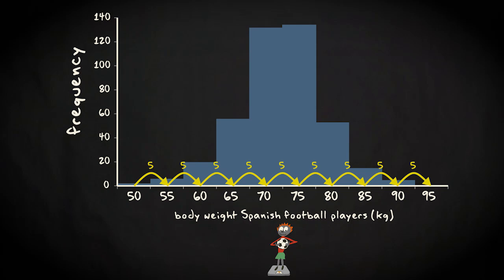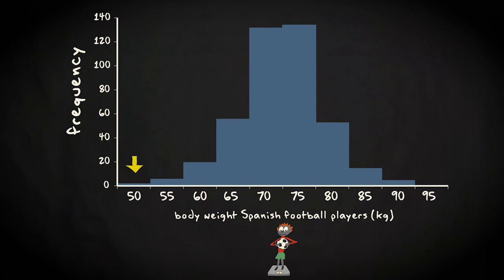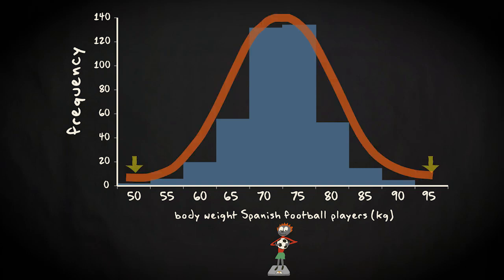You can see at a glance that most players weigh around 75 kilograms. You can also see that a weight of less than 60 or more than 90 is rather exceptional. As you can see, this histogram has a particular shape. It has the shape of a bell, has one peak, and is approximately symmetric. You will encounter such distributions very often.